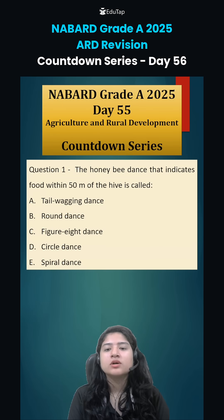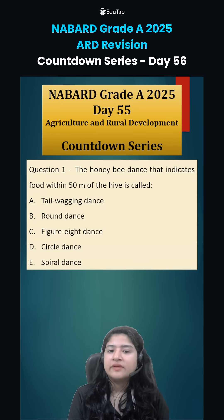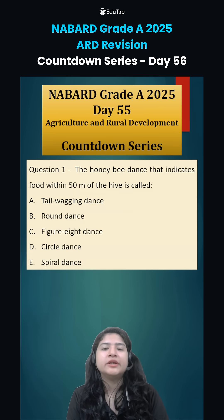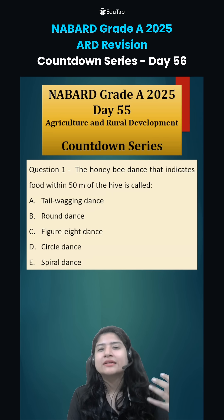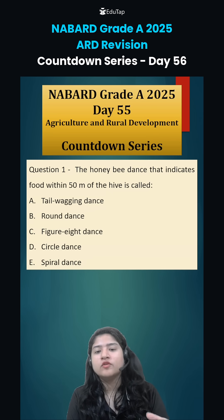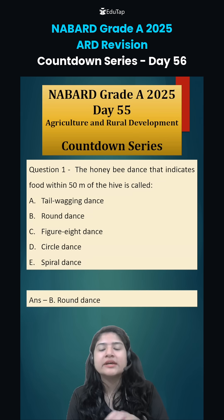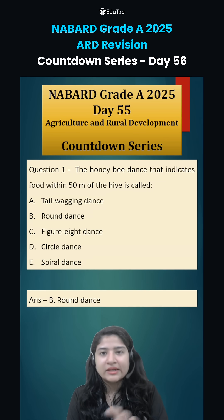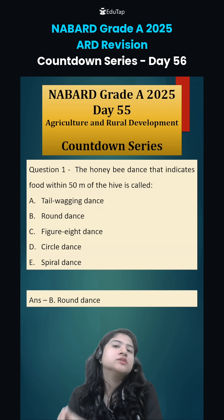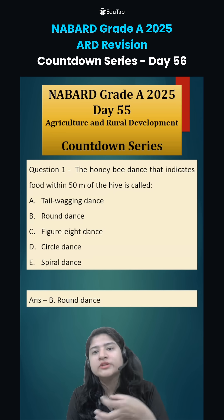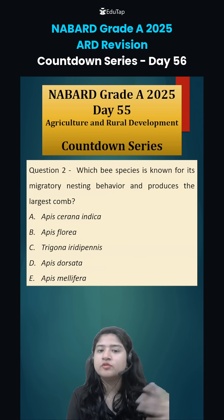Question number one was: the honeybee dance that indicates food within 50 meters of the hive is known as what? Honeybees communicate with each other to indicate where the nectar source is, in the form of dance. If it is within 50 meters, it is the round dance, and if it is from 50 to 100 meters, it is the tail wagging dance, which gives fellow bees an idea of how much distance they have to travel.